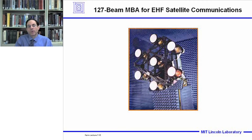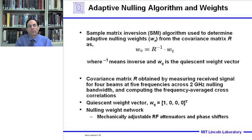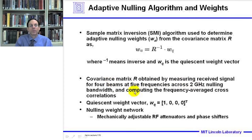Here's the completed 127-beam MBA, showing the seven lenses and the aluminum truss. Tests were done in an anechoic chamber with a compact range reflector. The adaptive nulling algorithm uses the sample matrix inversion (SMI) algorithm to determine the adaptive nulling weights W_A by computing the covariance matrix R, inverting it, and multiplying by the quiescent weight vector. The covariance matrix is obtained by measuring the received signal for four beams at five frequencies across the 2 GHz nulling bandwidth and computing frequency-averaged cross correlations. The nulling weight network consisted of mechanically adjustable RF attenuators and phase shifters.